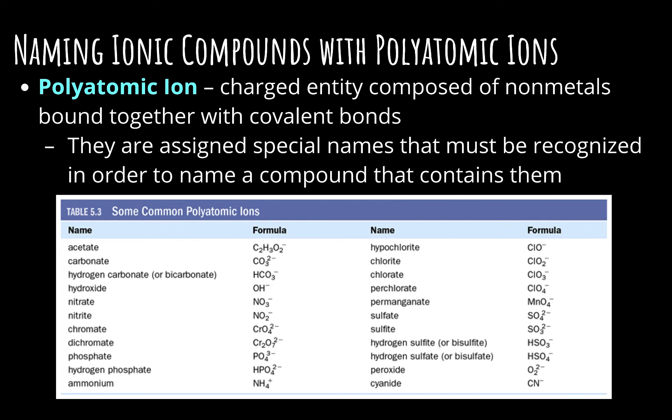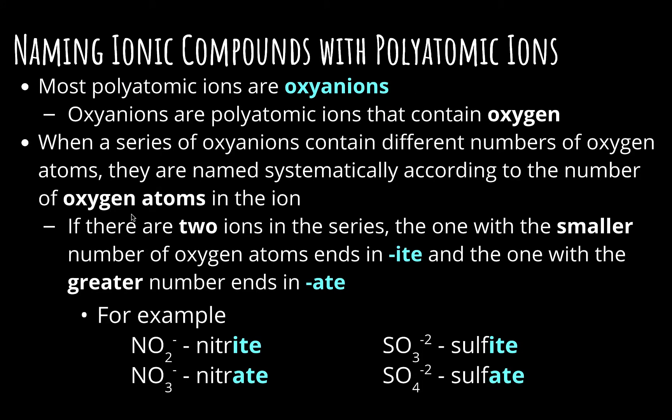You can see a chart here with some of the more common ones. You have a purple reference sheet that has the polyatomic ions on it as well, and that's what you'll use as we work through and learn to name these and write formulas for them. So most polyatomic ions we classify as oxyanions — a polyatomic ion that contains oxygen. When you have a series of these that have the same elements but different numbers of oxygens, they're named systematically according to how many oxygen atoms are in that particular ion.